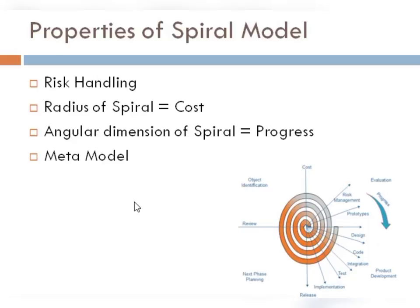Next property: this model is basically a meta model. We call it meta model because it is a combination of various other models. हम phases में काम कर रहे हैं, that means it is kind of a waterfall model क्योंकि हम phase by phase काम कर रहे हैं। यहाँ पर risk analysis के दौरान हम prototypes create करते हैं जिनके ऊपर हम risk analyze करते हैं, so it acts as a prototype model as well.